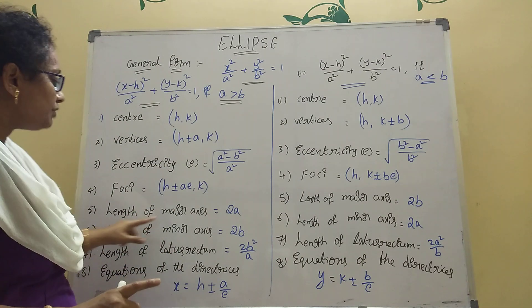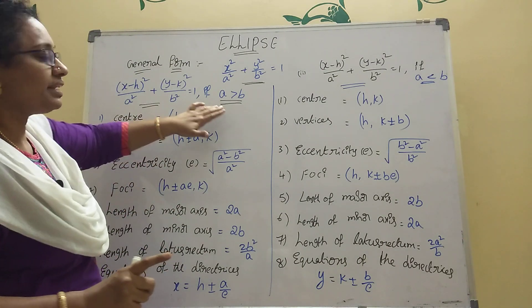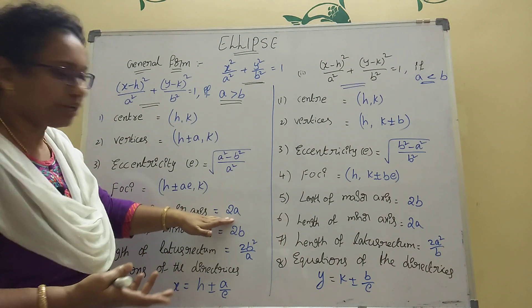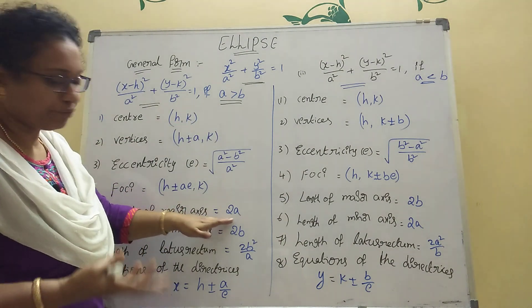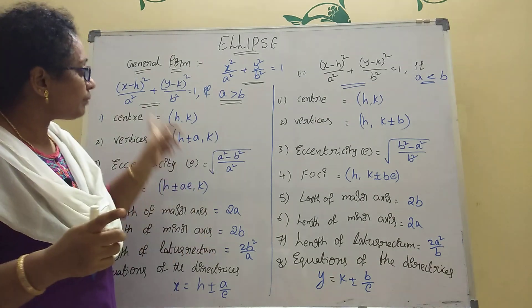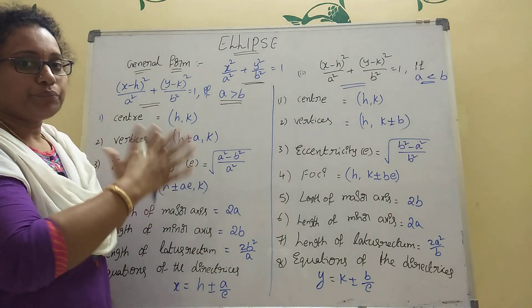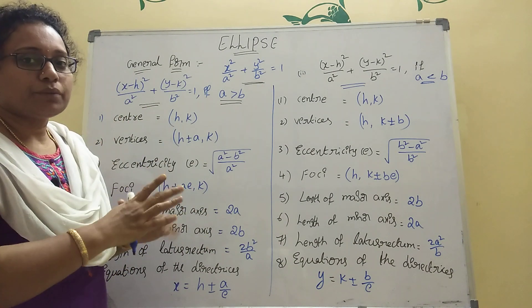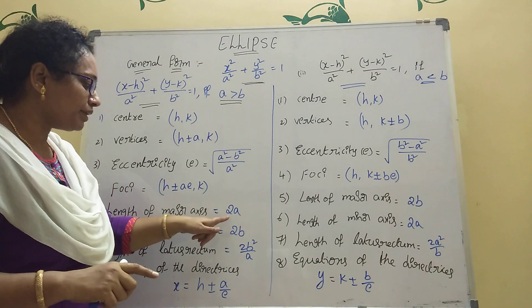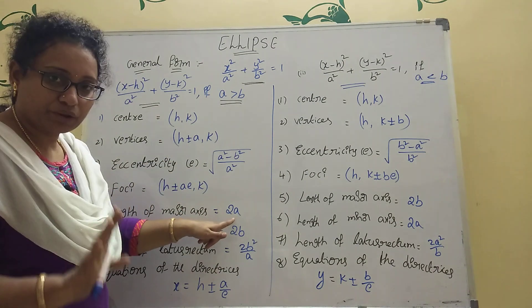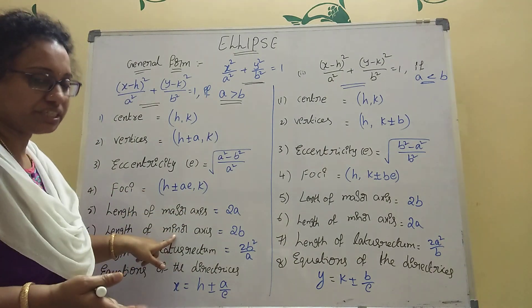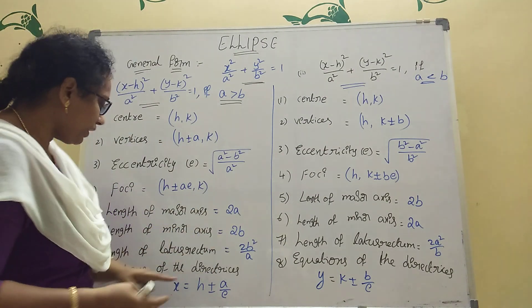Next, length of the major axis. If a is greater than b, the length of the major axis is 2a.